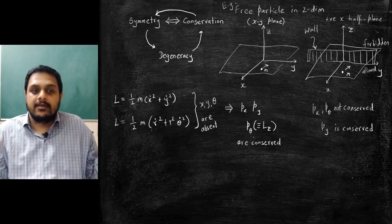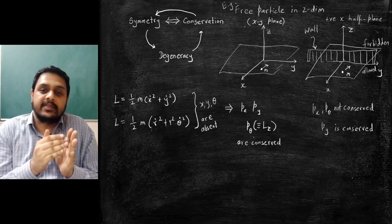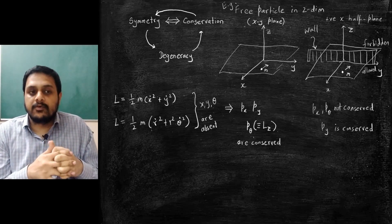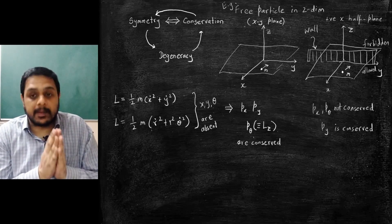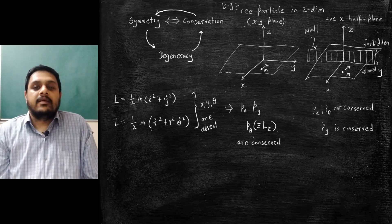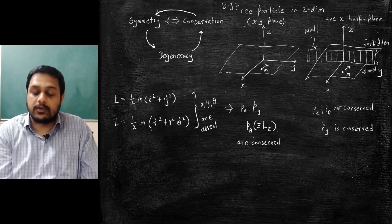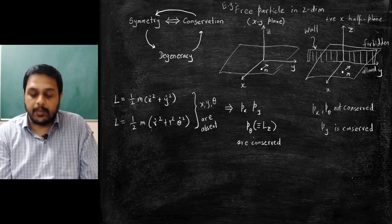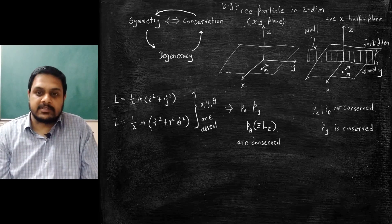This is a basic illustration of Noether's theorem: when x-translation symmetry and rotation symmetry were present, the corresponding momenta p_x and p_θ were conserved. The moment you introduced a wall breaking those symmetries, those momenta were no longer conserved. We also realize that translational symmetry leads to linear momentum conservation, rotational symmetry leads to angular momentum conservation, and by extension, time-translation symmetry leads to energy conservation.